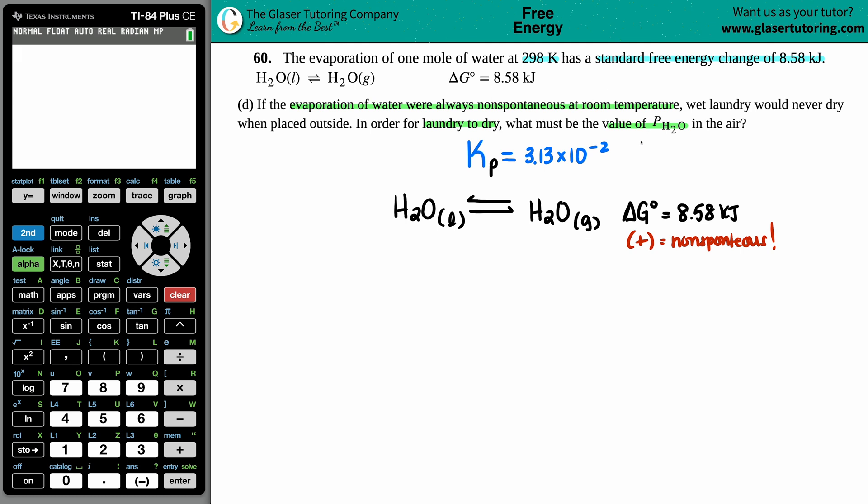But now we're talking about laundry here. They're saying that if it's always non-spontaneous, wet laundry would never dry. If we want that to dry, what must be that partial pressure? So when laundry is drying or when the laundry is done drying, what state do we want that water in?